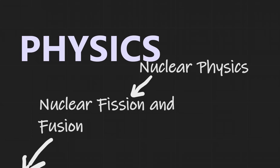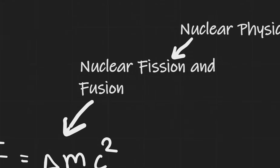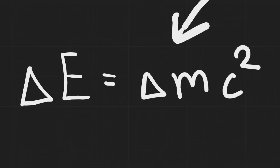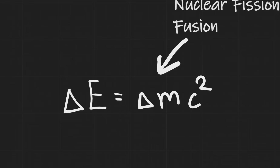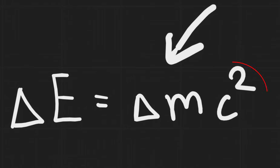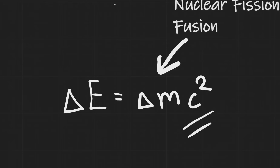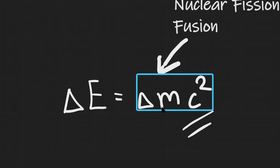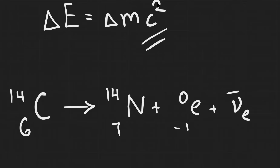Let's revise nuclear physics, starting with the very famous equation that delta E is equal to delta m c squared. This tells us if the mass changes by amount delta m, there will be a corresponding energy that's been either released or absorbed, which is delta E. Notice that there's a factor of c squared, meaning that we're going to get a huge amount of energy for every kilogram that has been converted.